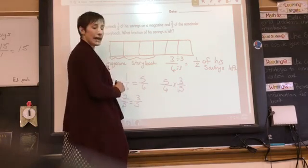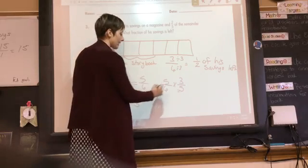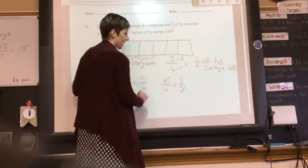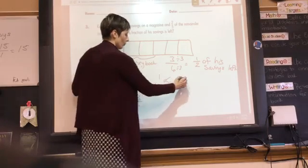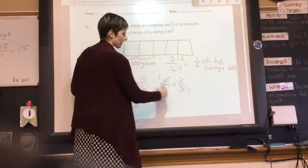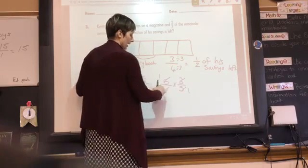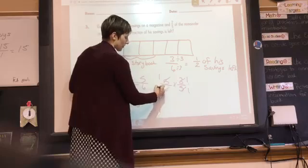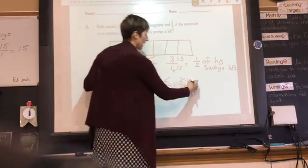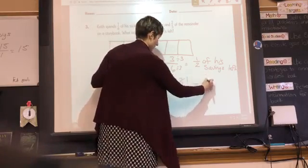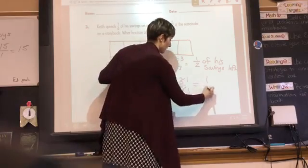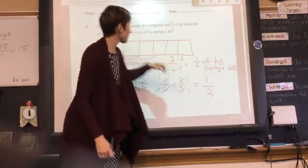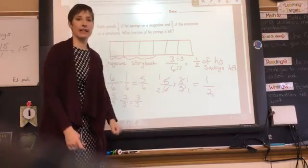So, we can go ahead and simplify before we multiply. We can divide both the numerator and denominator by five, which leaves us with one. We can divide both the numerator and denominator by three. Three divided by three is one. Six divided by three is two. I can multiply. One times one is one. Two times one is two. And I come up with the same answer, that one-half of Keith's savings is left.